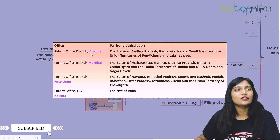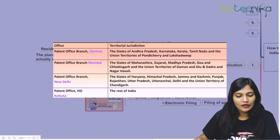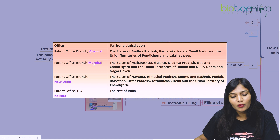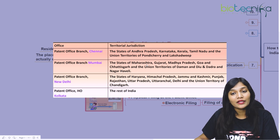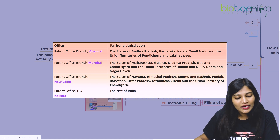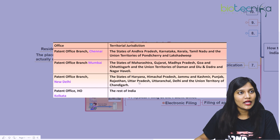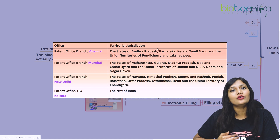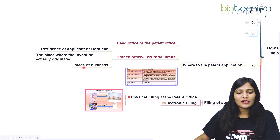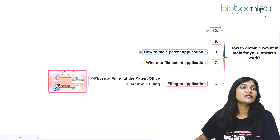There are four patent office locations. The branch in Chennai covers Andhra Pradesh, Karnataka, Kerala, Tamil Nadu, and Union Territories of Pondicherry and Lakshadweep. The Mumbai branch covers Maharashtra, Gujarat, Madhya Pradesh, Goa, Chhattisgarh, Daman and Diu, and Dadra and Nagar Haveli. The New Delhi branch covers Haryana, Himachal Pradesh, Jammu and Kashmir, Punjab, Rajasthan, and UT of Chandigarh. The rest of India applies to Kolkata, which is the head office.